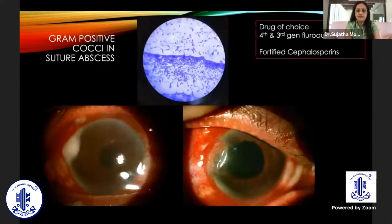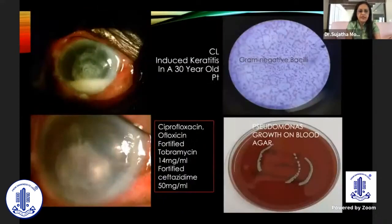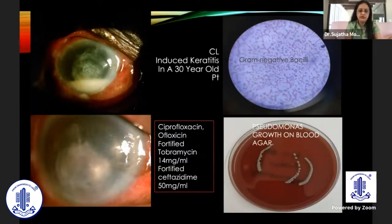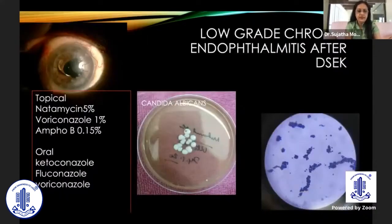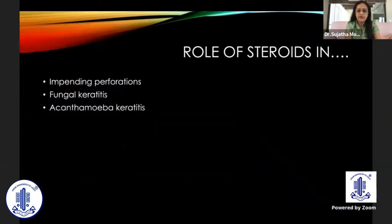Case examples from our hospital: a patient with gram-positive cocci in a suture abscess — the drug of choice is fourth/third-generation fluoroquinolones with fortified cephalosporins. A patient with gram-negative Pseudomonas infection did very well with tobramycin and fortified cefazidime. A patient with low-grade chronic endophthalmitis following DSAEK had antifungal treatment and vitrectomy, with Candida albicans growing in culture.